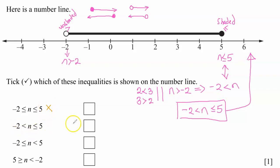Okay, the second option, yeah, perfect. So I'm going to tick, this is our answer, negative two less than n less than or equal to five.